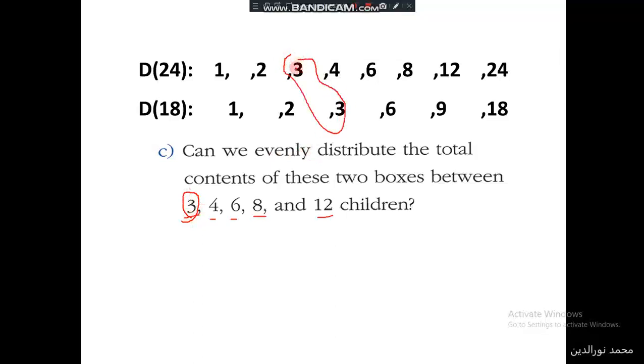We can distribute evenly among 3 children. Another possibility is distributing among 6 children. We could also distribute among 2, but that's not mentioned in the choices. So we select 3 and 6 as possible answers.